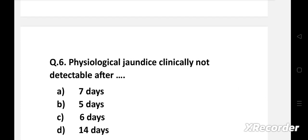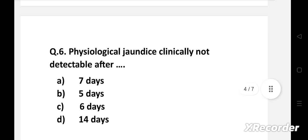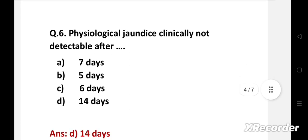Physiological jaundice clinically not detectable after option A seven days, B five days, C six days, D 14 days. Right answer is option D, 14 days. After 14 days physiological jaundice is clinically not detectable.